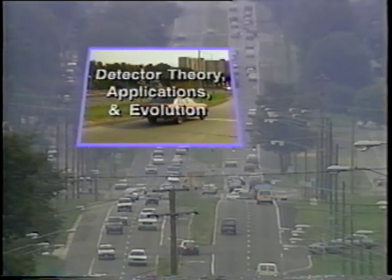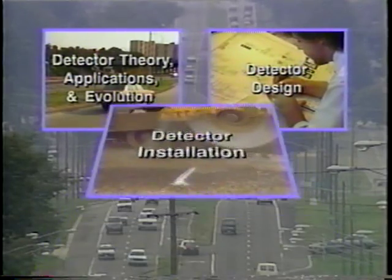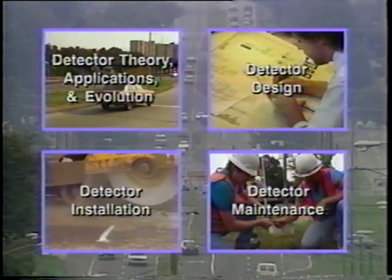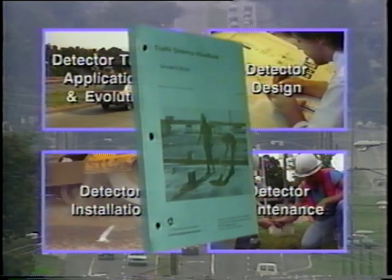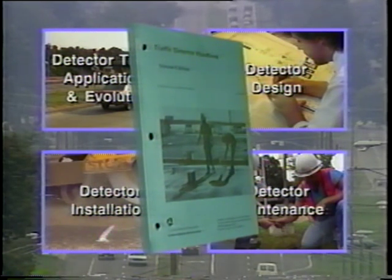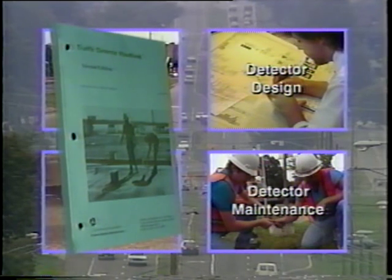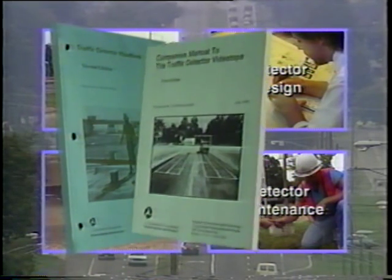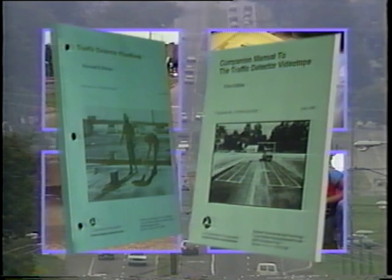The four sections are: detector theory, applications and evolution; detector design; detector installation; and detector maintenance. You may view this video all at once or in several sessions. However, you should first obtain a copy of the Federal Highway Administration's Traffic Detector Handbook, the resource reference for this videotape. In addition, there is an accompanying companion manual specifically for this traffic detector videotape.